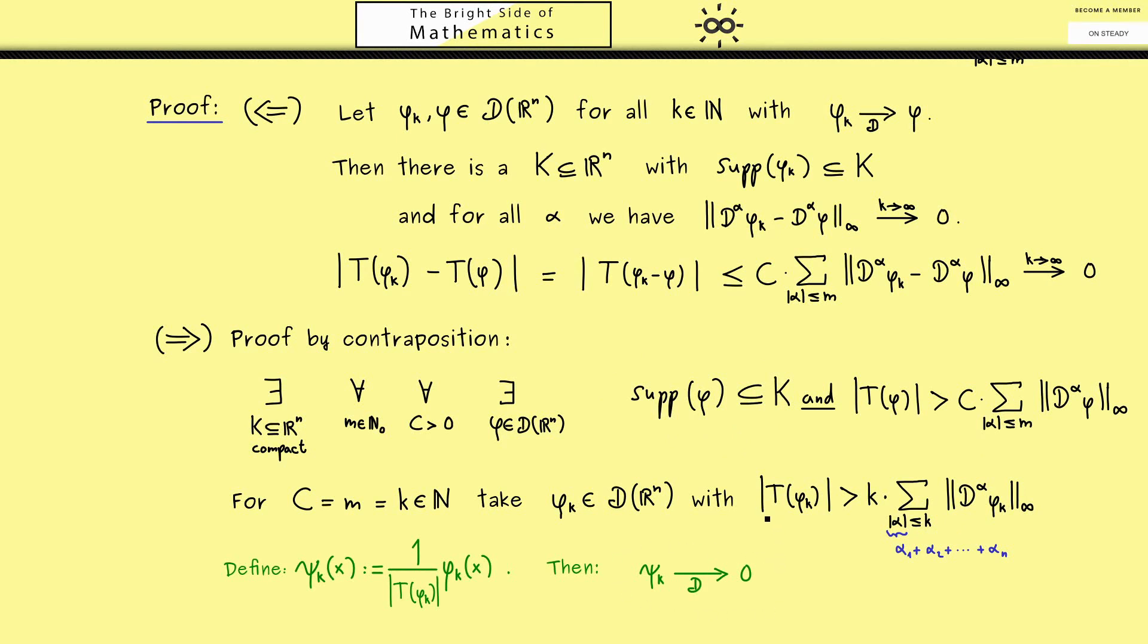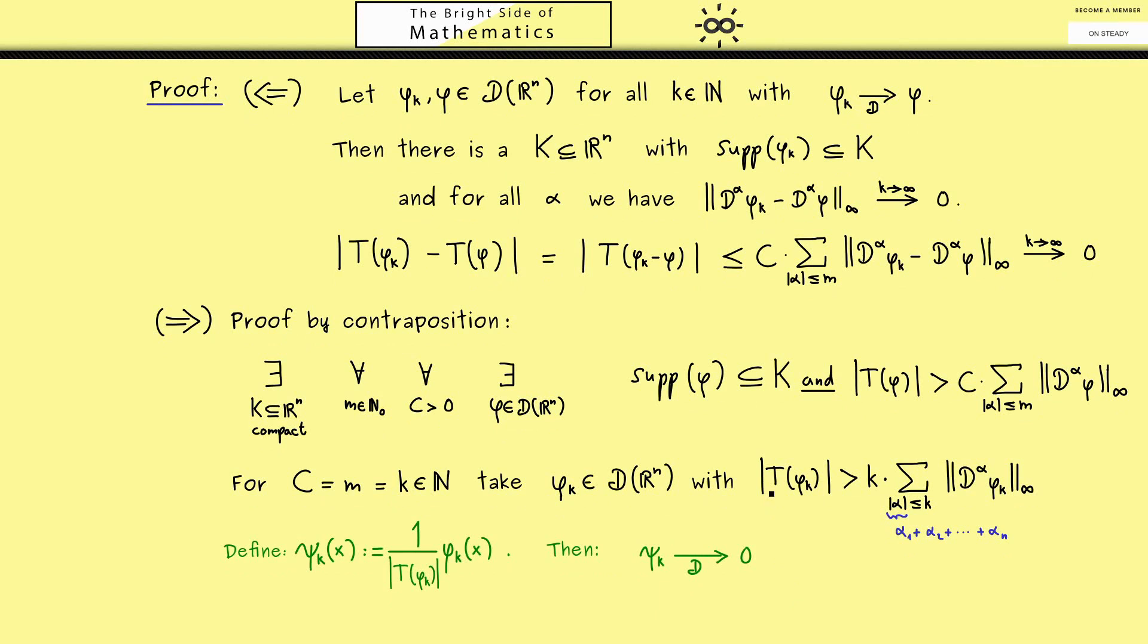Combining this with the supports being all in k, we have indeed the D convergence. However, now you might already see the images under T don't converge to zero.